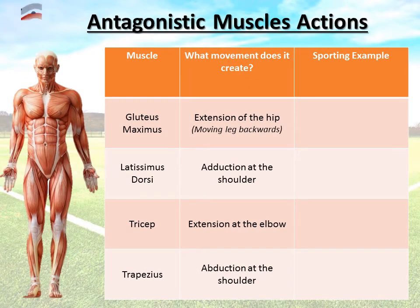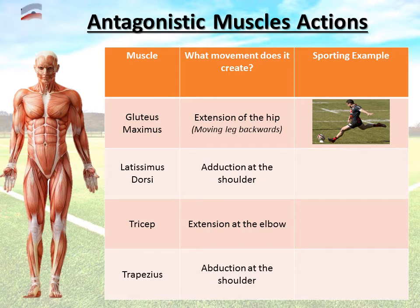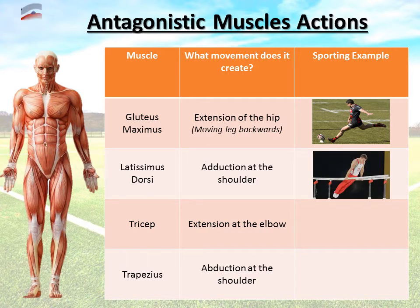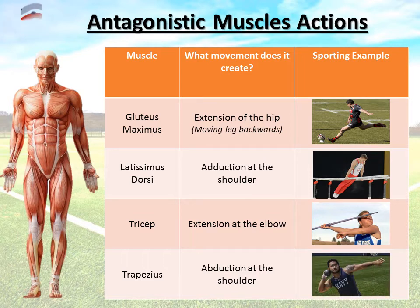The gluteus maximus, the large muscle in the bum, allows extension of the hip — moving the leg backwards at the hip. Don't confuse this with flexion of the knee. If you look at the player's right leg, his gluteus maximus is pulling his hip backwards to generate force. The latissimus dorsi, in the back, allows adduction of the shoulders, bringing the arms back down to the body — as seen on gymnastic bars. The tricep straightens the arm, extension at the elbow, as in javelin. And the trapezius, either side of the neck down to the back, allows abduction of the shoulder, as when driving a shot put away from the body.